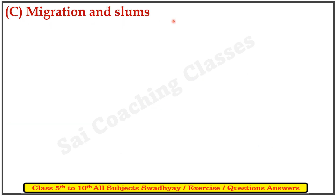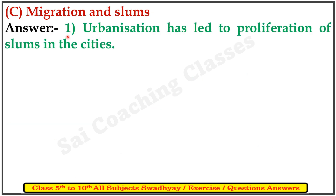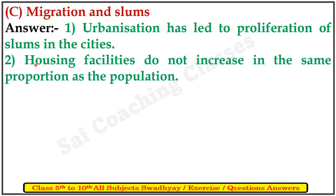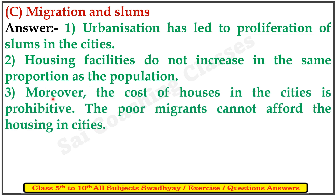C: Migration and slums. First, urbanization has led to proliferation of slums in the cities. Second, housing facilities do not increase in the same proportion as the population. Third, moreover, the cost of housing in the city is prohibitive and poor migrants cannot afford housing in cities.